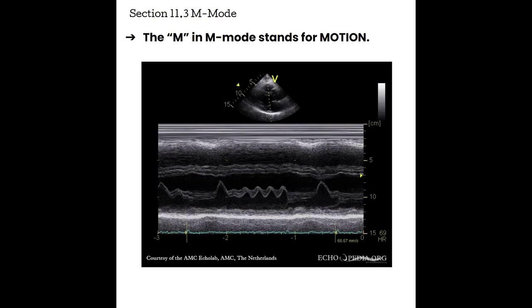Section 11.3, M mode. Now the M in M mode stands for motion. M mode is going to be used to graph the motion of anatomy over time. This is extremely helpful for many cardiac applications, like watching the wall motion and measuring ventricle size. OB/GYN sonographers are going to use it to evaluate the fetal heart, and it can be used in emergency medicine to observe lung motion.